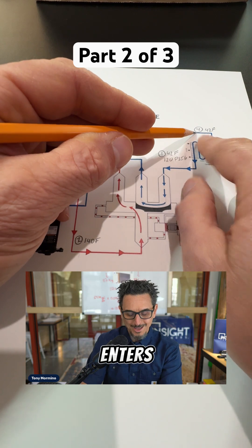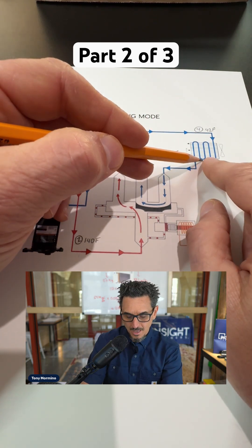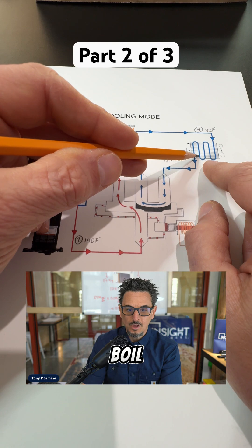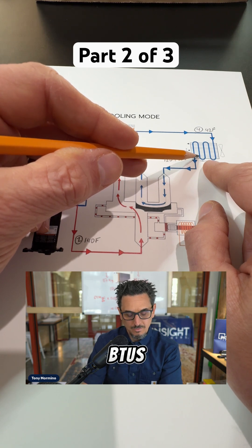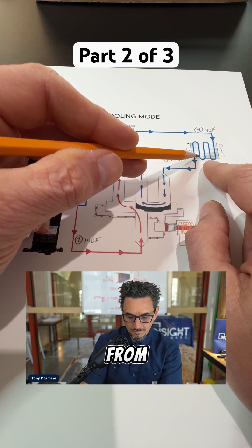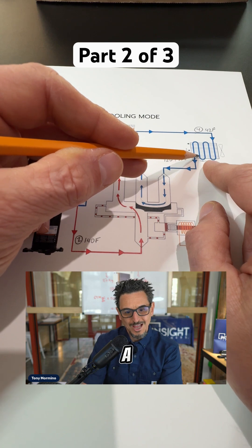Where it enters the evaporator coil and is now at a state where it can boil off and absorb a lot of BTUs because it's changing state from a liquid to a gas.